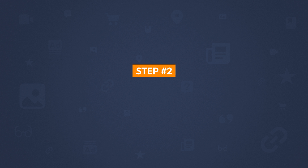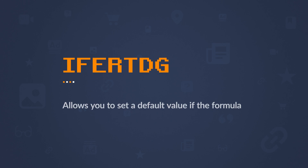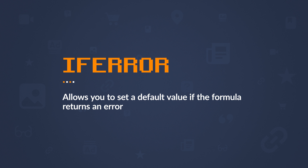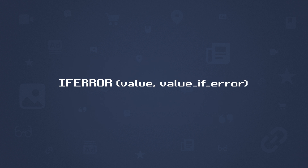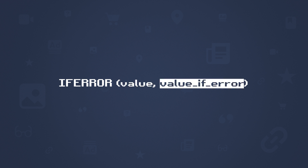We now have our data, so it's time to move on to step 2, which is to create our template. As I create the sheet, there are two functions I'll use frequently: IFERROR and ARRAYFORMULA. IFERROR allows you to set a default value if the formula returns an error. The syntax is basically saying, if this value returns an error, show a custom error message. Or if you leave the custom error message blank, it'll return an empty cell instead of an ugly error message.